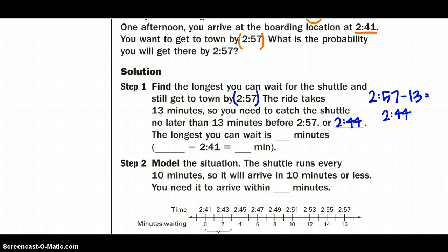So we have to be on the shuttle at 2:44 or earlier and probably earlier would be key. So that doesn't give us a whole lot of time to hope that the bus shows up. So how long do we wait or how long can we wait for that bus to show up? The longest we can wait, let's find it out. So I have to get on the bus at 2:44 because of that 13 minutes. And I show up at 2:41 so really that bus really needs to show up in three minutes or I might not make it in time.